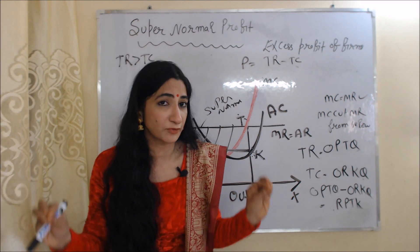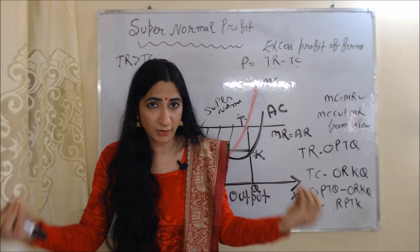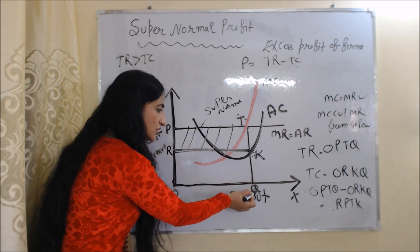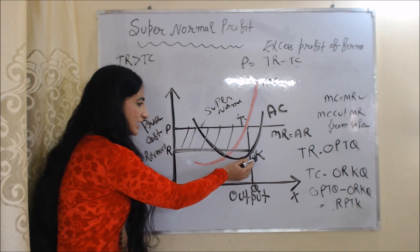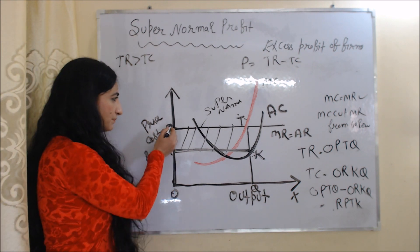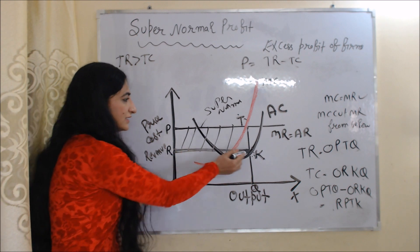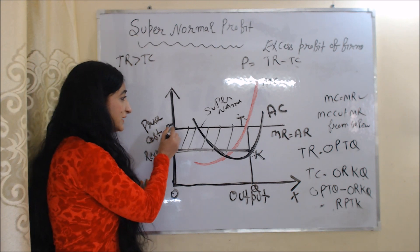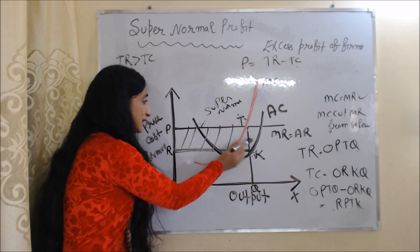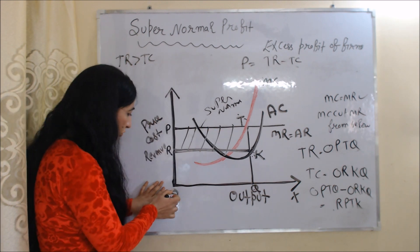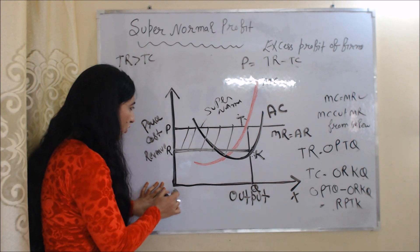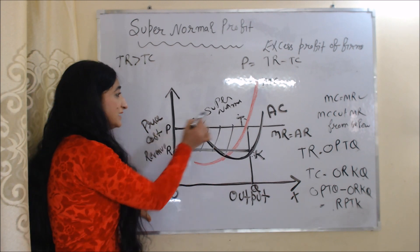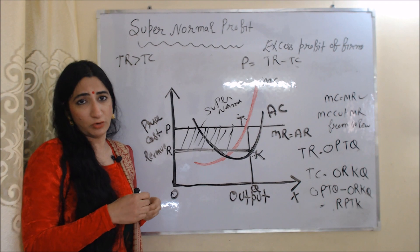We calculate super normal profit by subtracting total cost from total revenue. Here, our total cost is ORKQ and our total revenue is OPTQ. When we subtract ORKQ from OPTQ, we get RPTK. This area RPTK is our super normal profit.